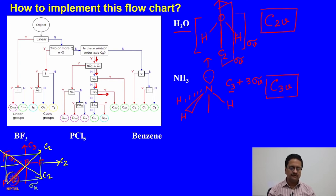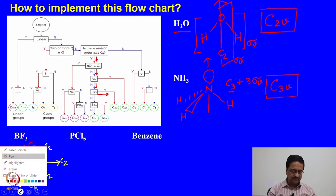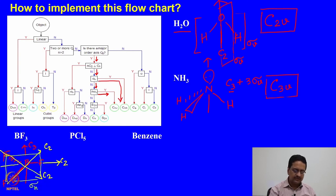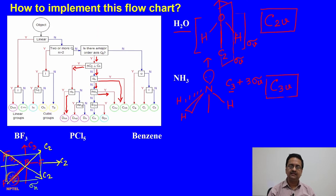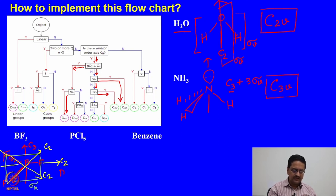Therefore, the point group of BF3: we have 3 C2's perpendicular to C3, so we come to the left. We have σh, and that σh makes it DnH — that is D3h.